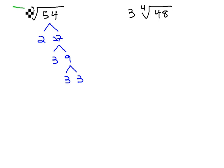The only difference now is because we have a cube root, we're looking for sets of 3. It takes 3 matches to come out of the radical rather than 2 with the square root.